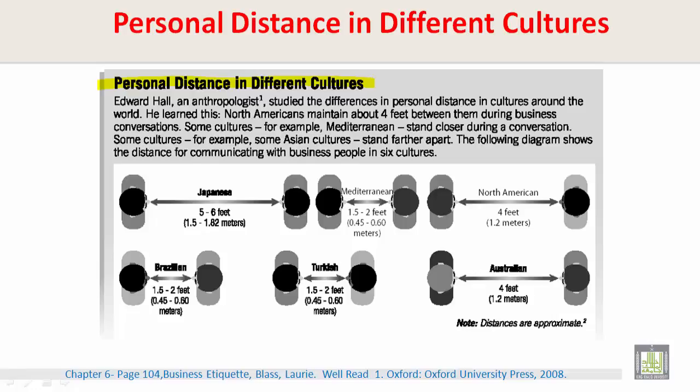North Americans maintain about 4 feet between them during business conversations. Some cultures, for example Mediterranean, stand closer during a conversation. Some cultures, for example some Asian cultures, stand farther apart. The following diagram shows the distance for communicating with people in 6 cultures.